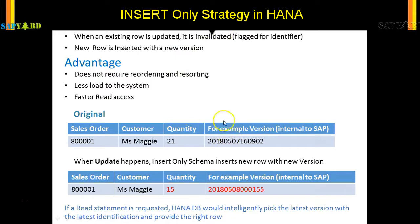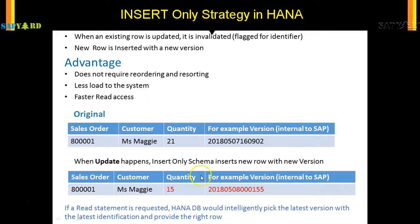With insert only, you are not modifying what was there earlier — you are just adding a new entry with a new timestamp. And if you have to read it, even if both entries share the same primary key, HANA will send you 15 as the result, not 21, because it looks for the latest timestamp. That makes the read very fast. So it is good for OLTP and it is also good for OLAP.